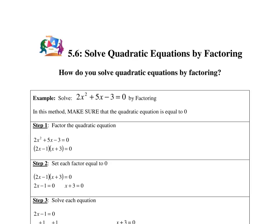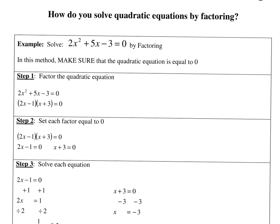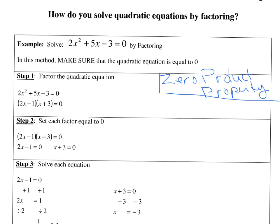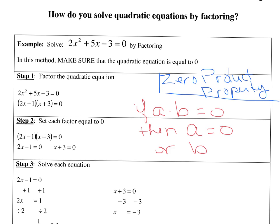There's one key element of this method we're going to talk about first: the zero product property. It's a property you have to know to solve quadratic equations by factoring. The zero product property states that if you have two things being multiplied — if a times b equals zero — then one of them has to equal zero, or both of them. So a has to equal zero, or b has to equal zero, or both. We're going to use this a lot while solving quadratic equations.